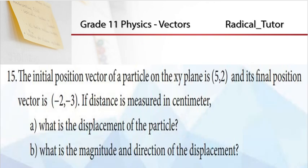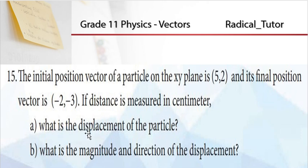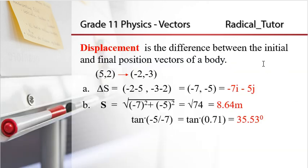This is question number 15. The initial position vector of a particle on the xy-plane is (5, 2). Its final position vector is (-2, -3). The distance is measured in centimeters. What is the displacement of the particle — the magnitude and direction?